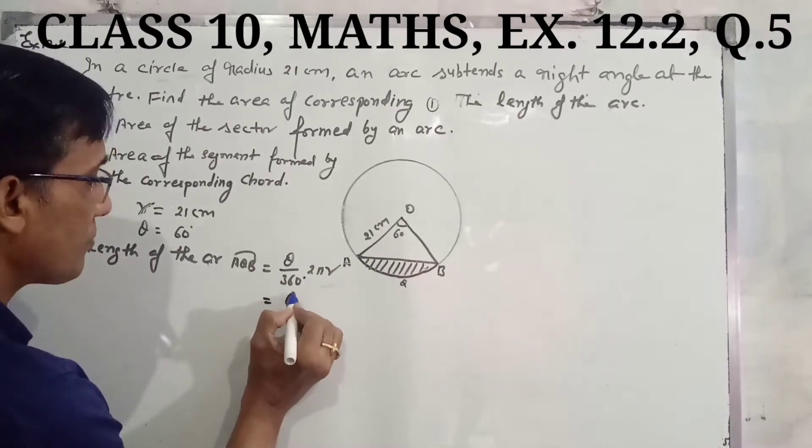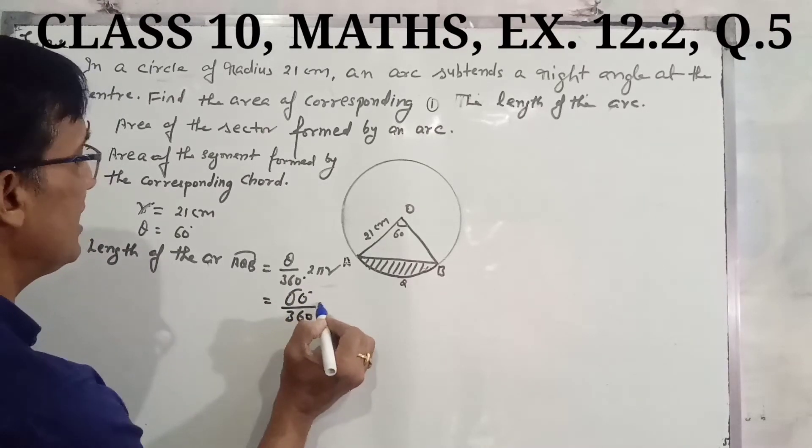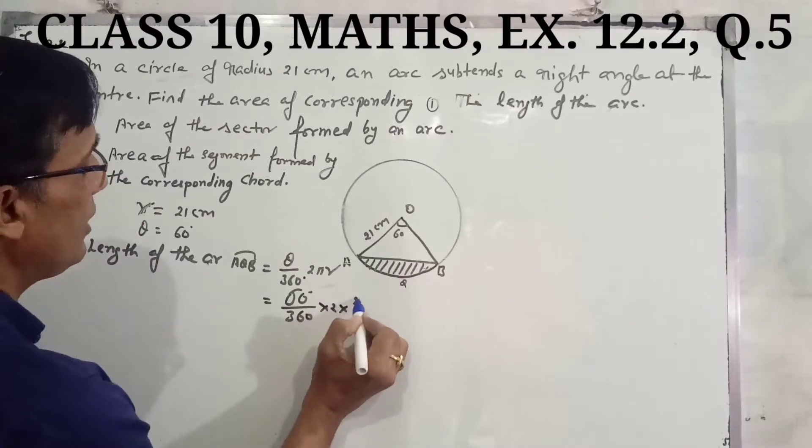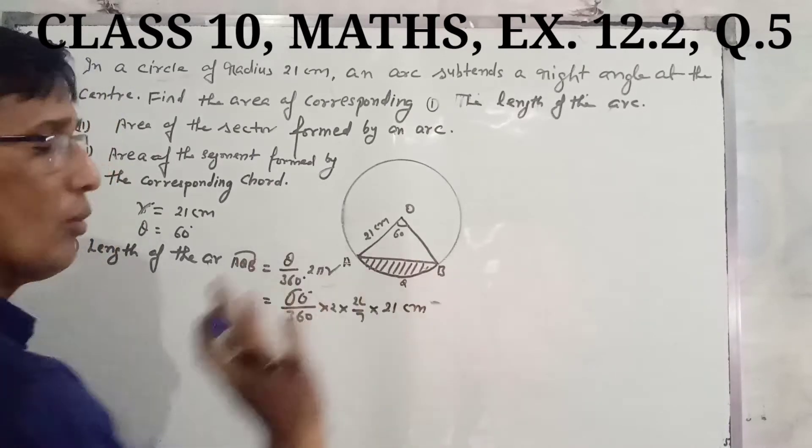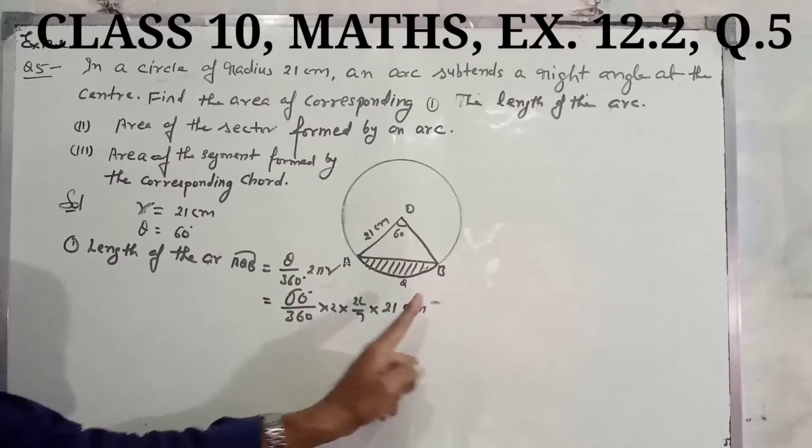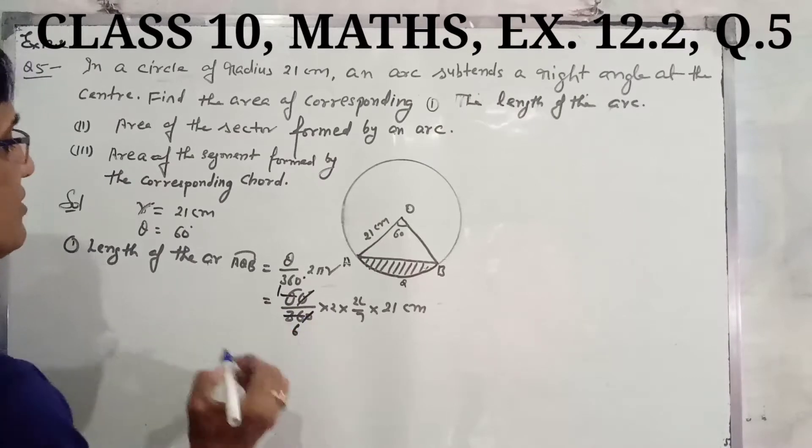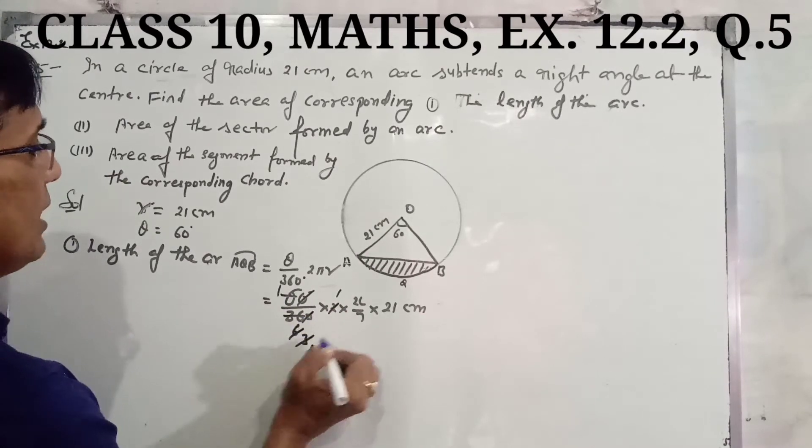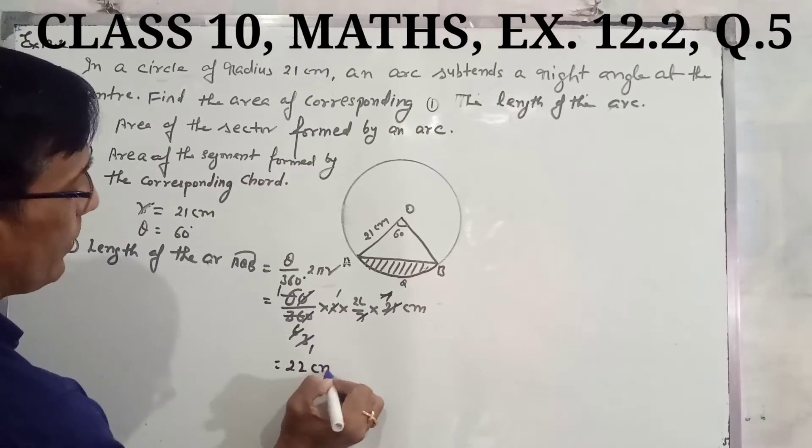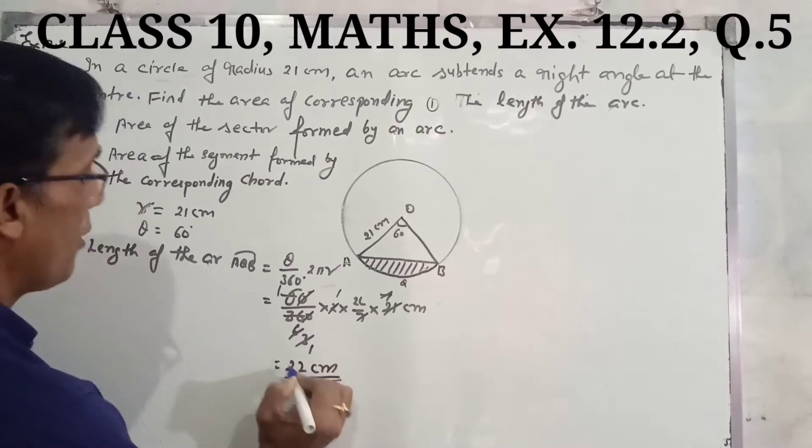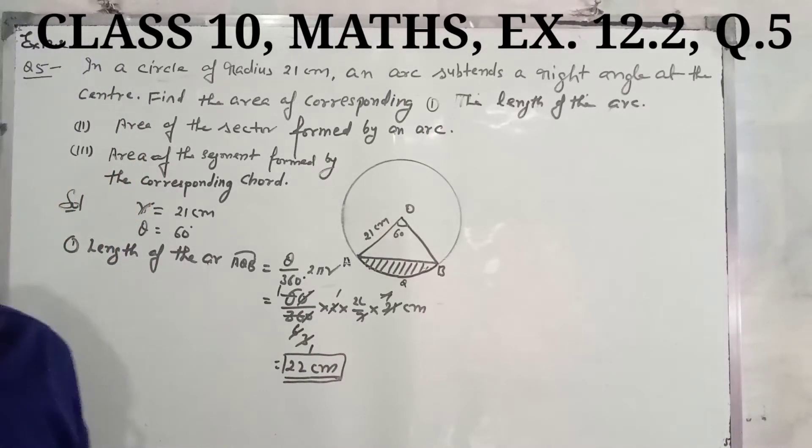Here the value of theta is 60 degrees, so we have 60 upon 360, multiplied by 2, pi is 22 upon 7, and r is 21 centimeters. After calculation, 60 cancels with 360 giving 1/6, and we get 22 centimeters. The length of the arc is 22 centimeters.